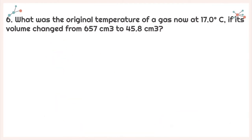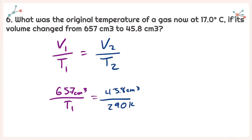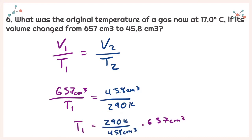Next up, it asks what was the original temperature of a gas now at 17 degrees Celsius if its volume changed from 657 centimeters cubed to 45.8 centimeters cubed? I'm going to write down my equation: V1 over T1 is equal to V2 over T2. I see 17 degrees Celsius — I need to change that to Kelvin, so it becomes 290 degrees Kelvin. Solving for T1, I get 290 Kelvin over 45.8 centimeters cubed times 657 centimeters cubed. Plugging all of that into my calculator, I get an initial temperature of 4,160 degrees Kelvin.